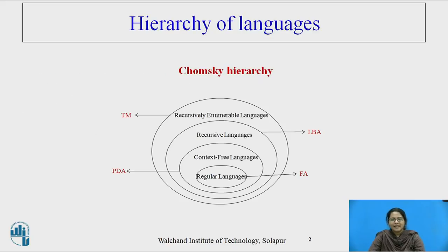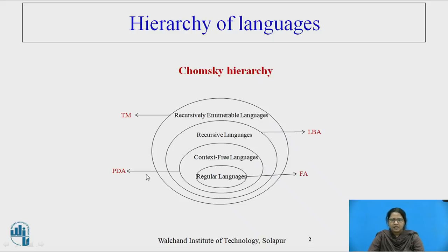Before the actual session, we will spend a couple of minutes on revision. As described by Chomsky, the hierarchy of languages is categorized into four types. Regular language is accepted by finite automata; context-free language is accepted by pushdown automata; linear bounded automata accept recursive language; and Turing machines accept recursively enumerable languages.